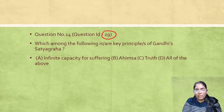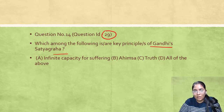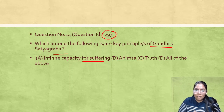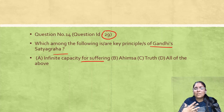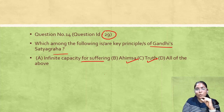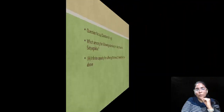Question ID 29: Which among the following are key principles of Gandhi's Satyagraha? The principles include bearing suffering to an infinite capacity, following Ahimsa, and following Truth. So the answer is clearly option D — all of the above. Very simple question.